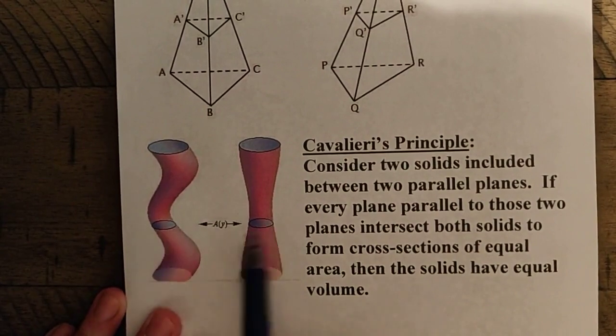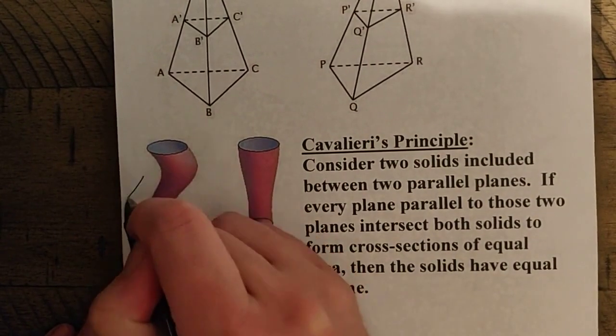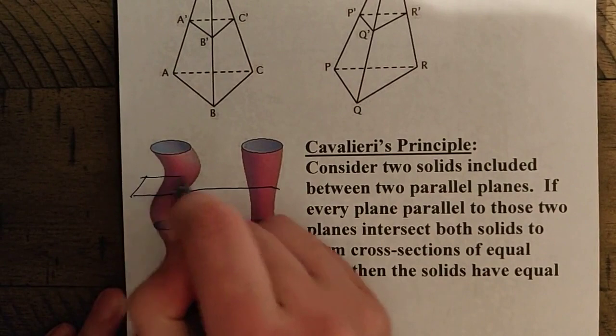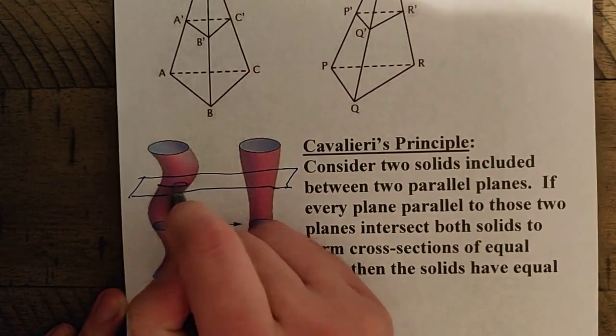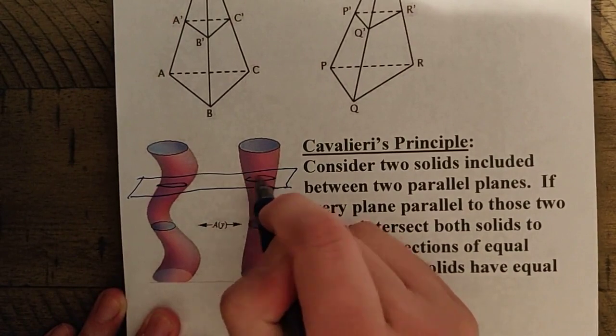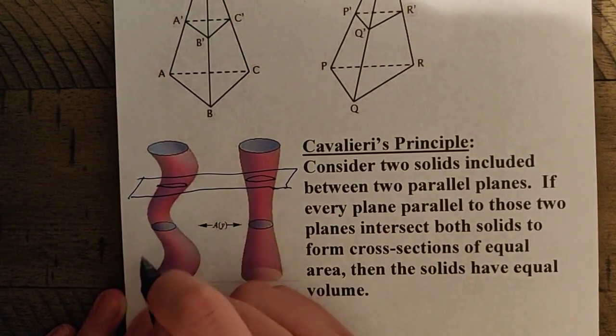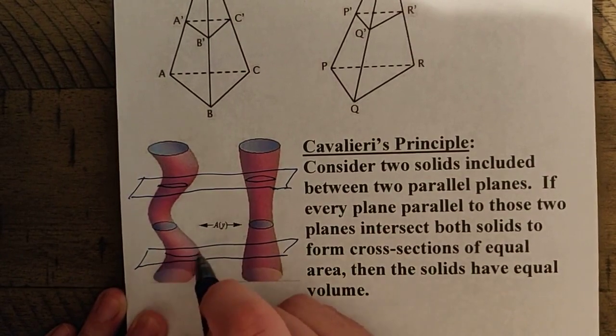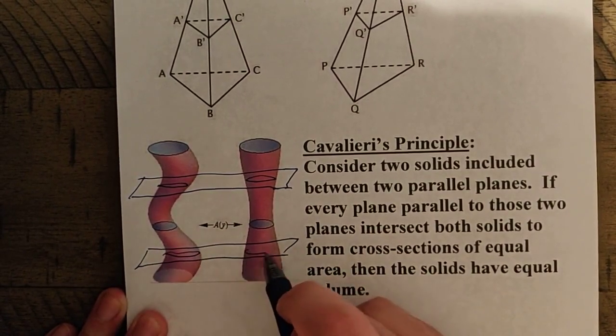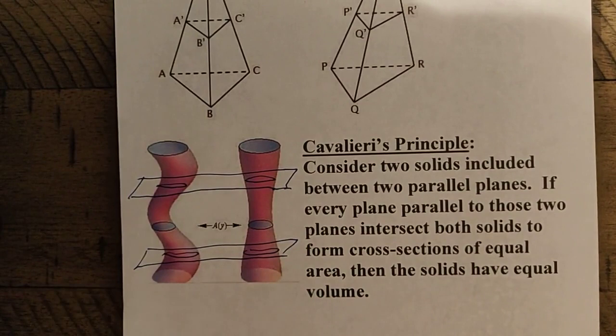So notice how in this situation here, these two things have equal area. If I were to slice through the two solids like this here, right, this is basically saying no matter where I choose to slice, and I look at their cross-sections here, if I slice at any given place, and the areas are always equal,